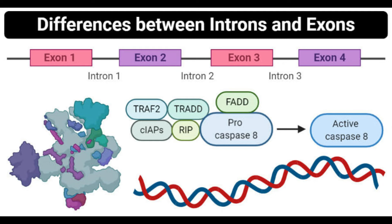Comparing introns and exons by definition: Introns are non-coding DNA sequences within a gene that are removed by RNA splicing during maturation of the RNA product. Exons are protein-coding DNA sequences that carry the necessary codons or information necessary for protein synthesis. By type of sequence: introns are non-coding sequences that do not code for any protein, while exons are protein-coding sequences that code for specific proteins.